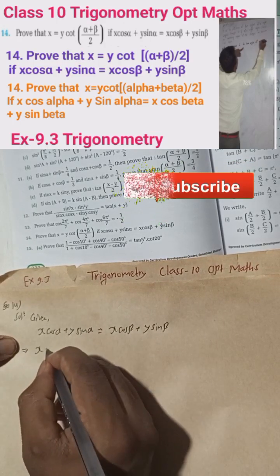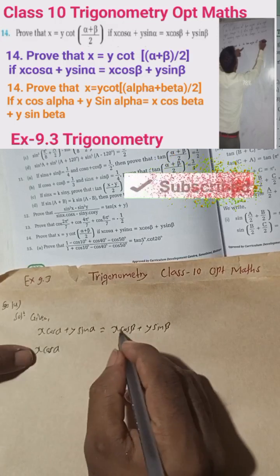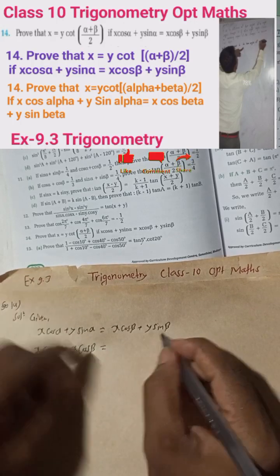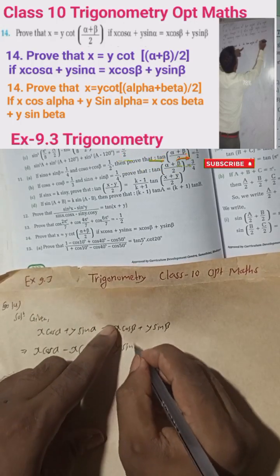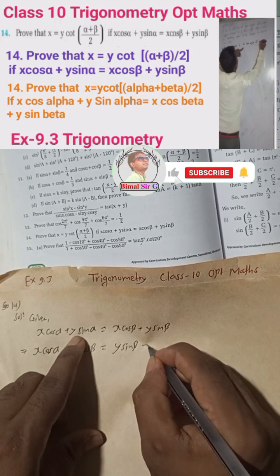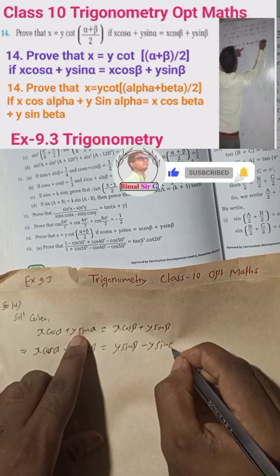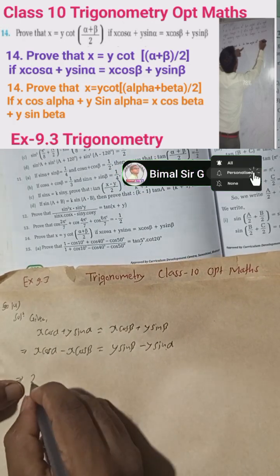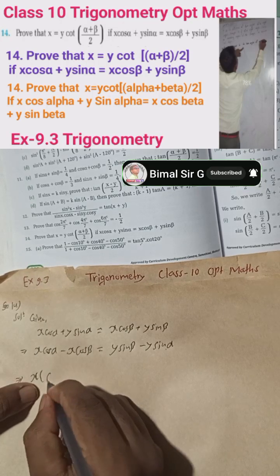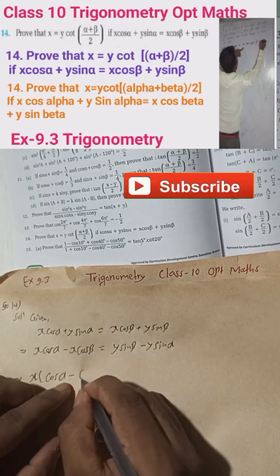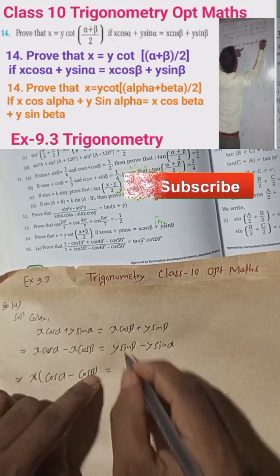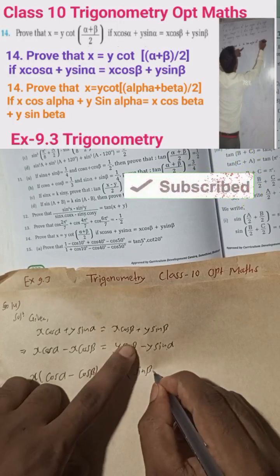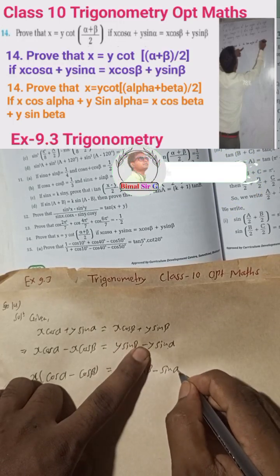Now rearranging: take x·cos(α) and bring x·cos(β) to the same side, so it becomes x·cos(α) minus x·cos(β) is equal to y·sin(β) minus y·sin(α). Taking x common gives x(cos(α) − cos(β)) = y(sin(β) − sin(α)).